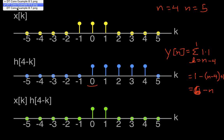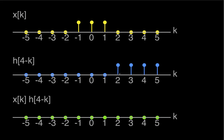Finally, we have the situation where the non-zero portions of x and h no longer overlap at all. This is the case where n is greater than or equal to 6, and y of n equals 0.